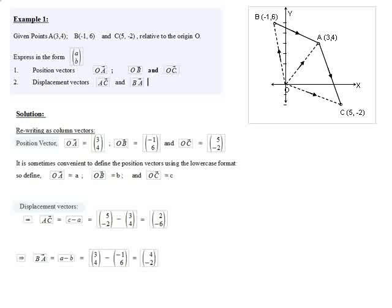For the displacement vector BA, it is similarly a minus b — the ending position vector minus the beginning position vector — which equals four over minus two. So what these vector problems essentially reduce to is an exercise in subtracting column matrices. This should remove much of the apparent difficulty in the subject. The entire exercise is simply subtracting column matrices, and the key is knowing exactly when to do the subtraction and what to subtract.